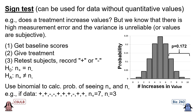First, we get baseline scores or measurements. Second, we give the treatment. Third, we retest the subjects and instead of focusing on the values, we just record whether the value increased or decreased. Our null hypothesis, if nothing was going on, would be that the number of increases will equal the number of decreases. Our alternative hypothesis is that they would not be equal.